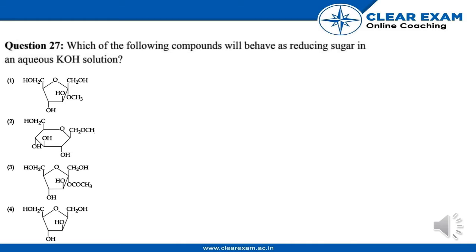The question is: which of the following compounds will behave as a reducing sugar in the AgNO₃/KOH solution? These are the options.